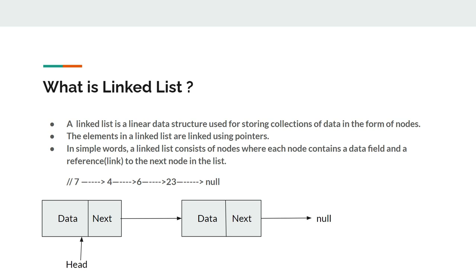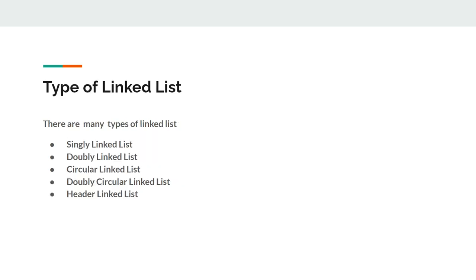As you can see in the picture, we have two nodes. The first node is called the head node, which consists of data and a pointer to the next node. The next node also contains data and a pointer to the next node. In the second node, we don't have any other nodes, so that is why it is pointing to null. Now let's jump to the types of linked list.